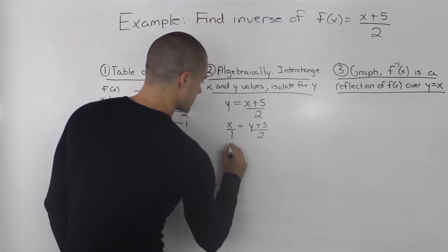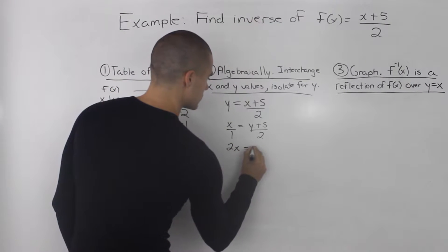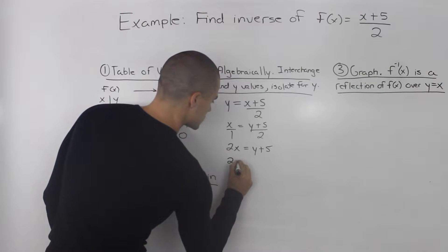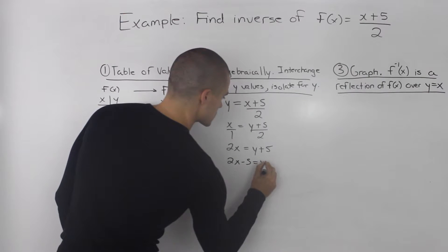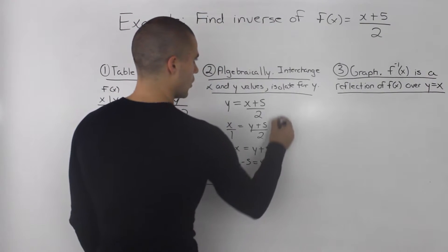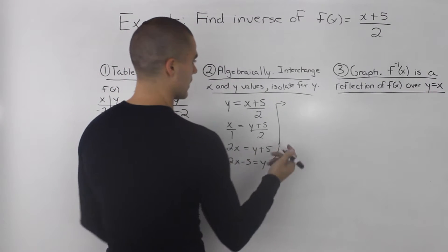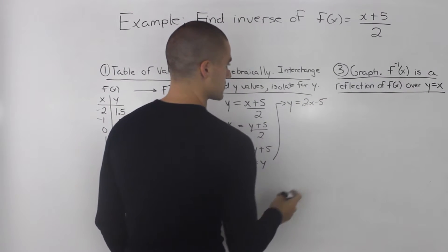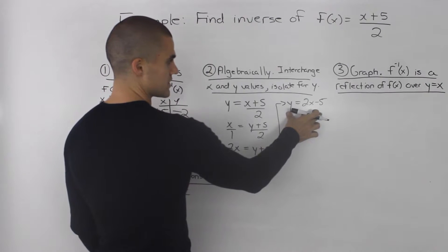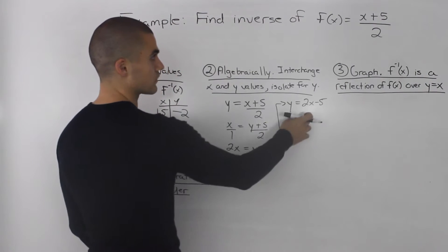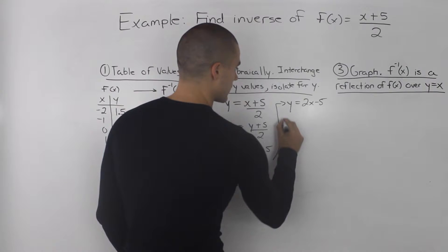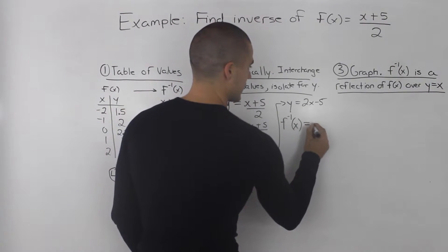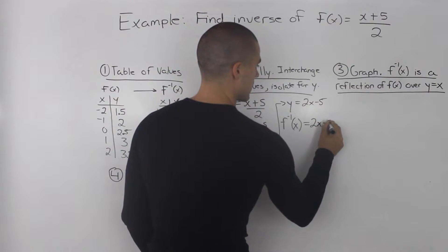So we can cross multiply here. So we'd have 2x equals y+5. And then bring the 5 over. So we'd have 2x-5 equals y. Or if we switch everything over, y equals 2x-5 just to make it look nicer. So this here represents the inverse of this function. And we can rewrite it with notation, f^(-1)(x) equals 2x-5.